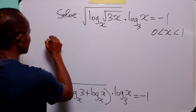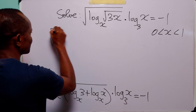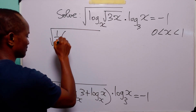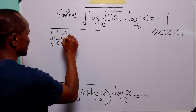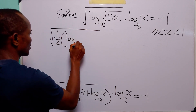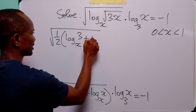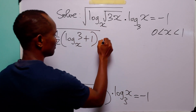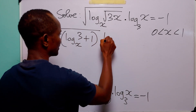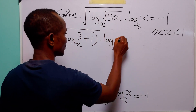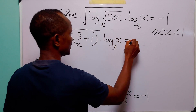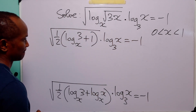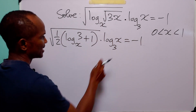So this is equal to half multiplied by log to base x of 3 plus 1, multiplied by log to base 3 of x, and this is equal to minus 1. Note that log to base x of x equals 1.